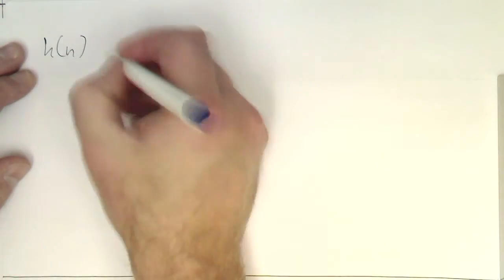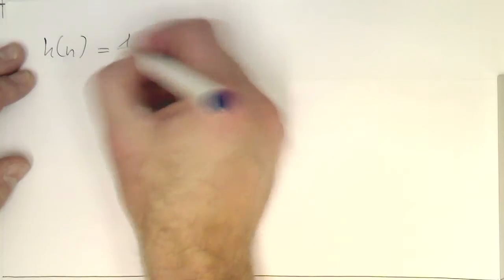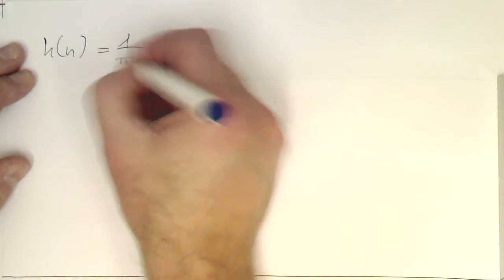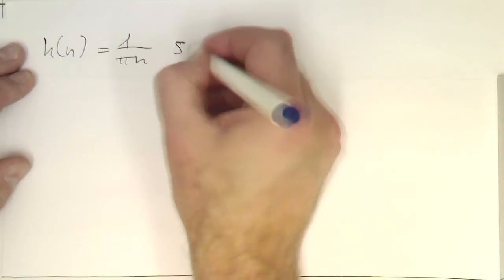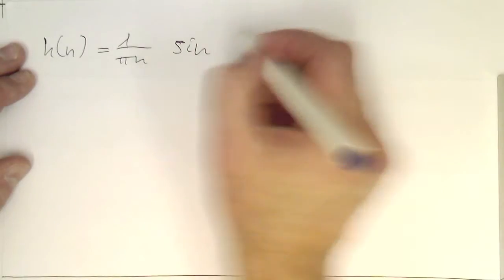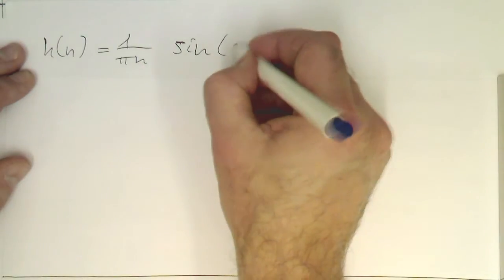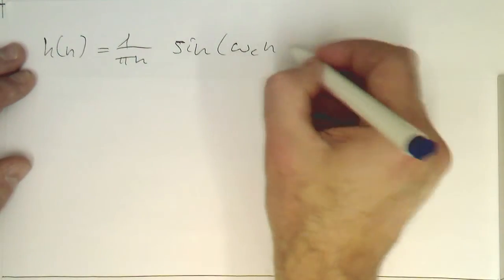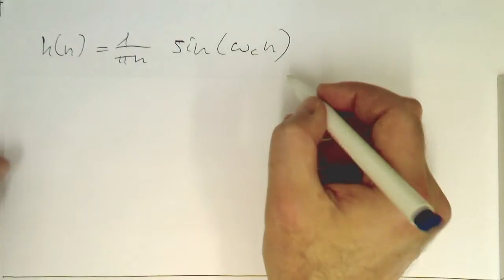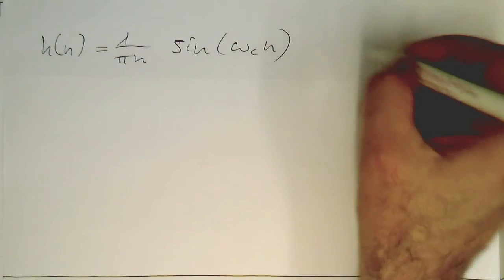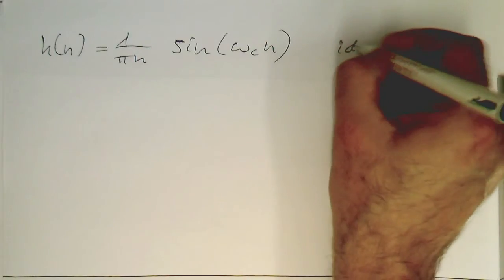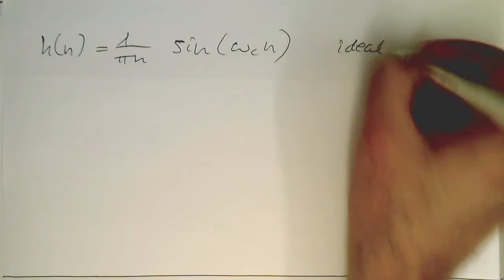So h of n is 1 over pi n times sine of omega c n. That is essentially a sinc function, and this is our ideal low-pass filter impulse response.